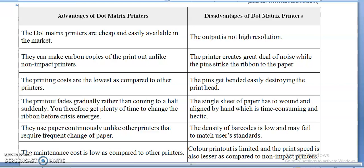Dot matrix printers use a ribbon cartridge, and the price of that cartridge is very low. The ink output fades gradually rather than stopping suddenly, giving you plenty of time to change the ribbon before a crisis — changing the cartridge is not much of a task. Unlike other printers that require frequent paper changes, dot matrix printers support continuous sheet stationery, which can be fed continuously during printing.